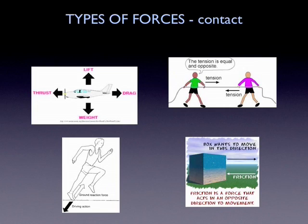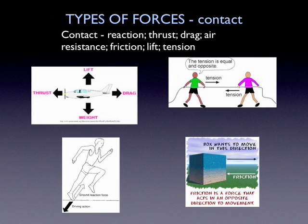And then we have friction. The box is trying to move to the right under the force, but friction is a force that is trying to stop it moving in that direction, and friction is a contact force. So our contact forces are reaction, thrust, drag, air resistance, friction, lift, and tension.